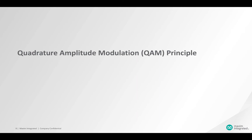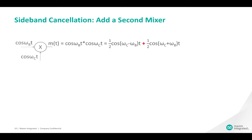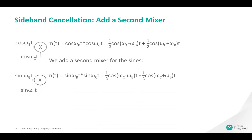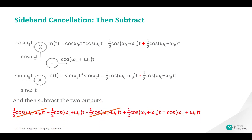Let's look at how QAM solves the bandwidth problem. We can choose one of the two sidebands to remove, for example the one on the left. How do we eliminate it given that a filter is not an option? We start with our first mixer for the cosines and add a second mixer for the sines. By subtracting the output of the second mixer, we're able to cancel out the lower sideband without using a filter.